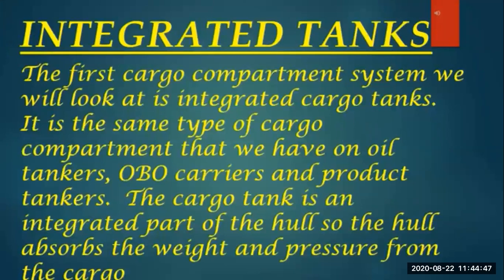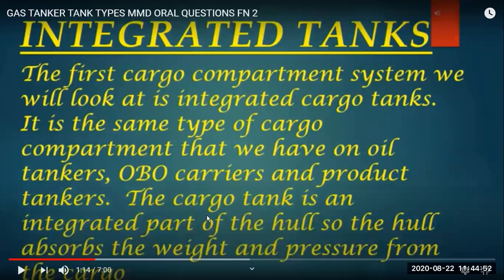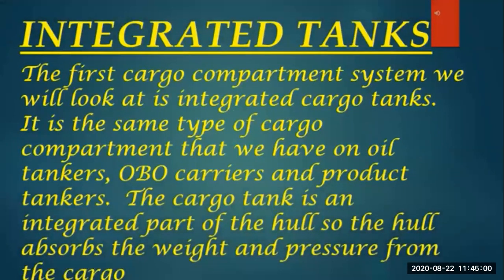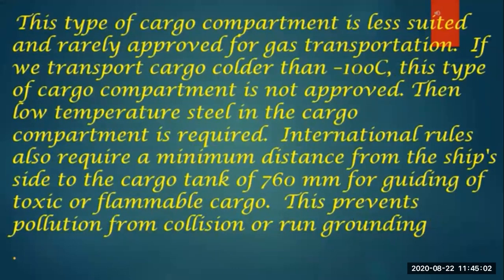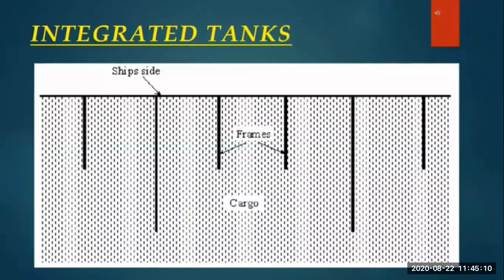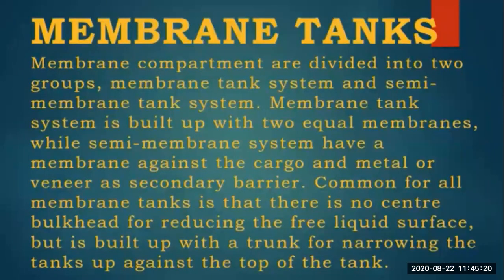Integrated tanks are the first cargo compartment system, found in oil tankers, bulk carriers, or chemical tankers - a normal tank connected to the hull. This type is generally not suitable for gas transportation, as we need either cooled cargo, pressurized cargo, or semi-pressurized cargo. Then we have membrane tanks, which are divided into two groups: membrane tanks and semi-membrane tanks.